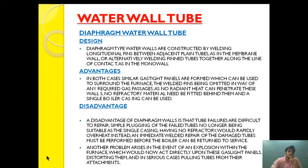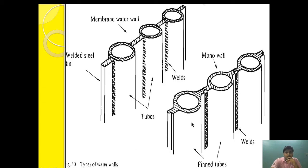A disadvantage of the diaphragm wall is that if a tube failure occurs, it is difficult to repair. Simple plugging of the failed tube is no longer suitable, since with a single casing and no refractory, it would rapidly overheat. Instead, immediate weld repair of the damaged tube must be performed before the boiler can be returned to service, as the continuous structure means any damage will cause huge leakage.